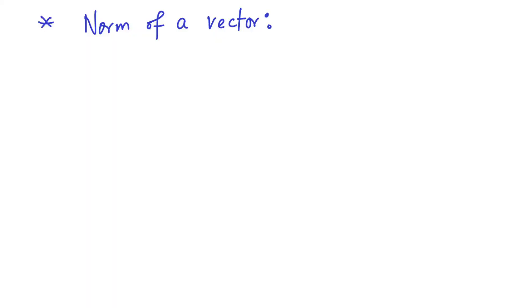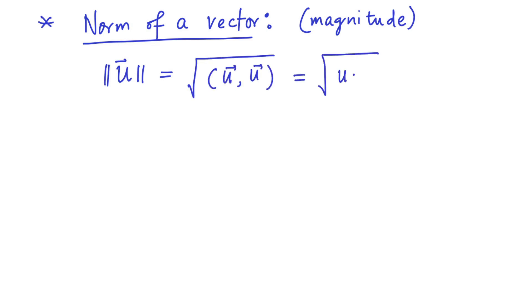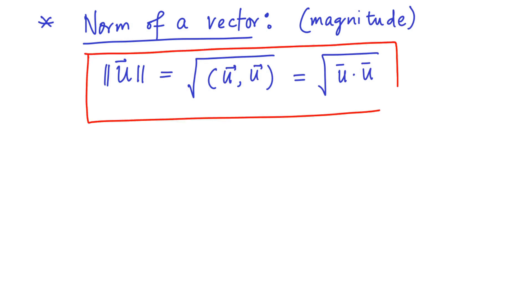We will see later that Kronecker delta is a very powerful mathematical symbol that will be very useful later on. Now we are going to define what is called the norm of a vector, or magnitude of a vector. The norm of a vector u is denoted as shown, which is the square root of the inner product of u with itself.